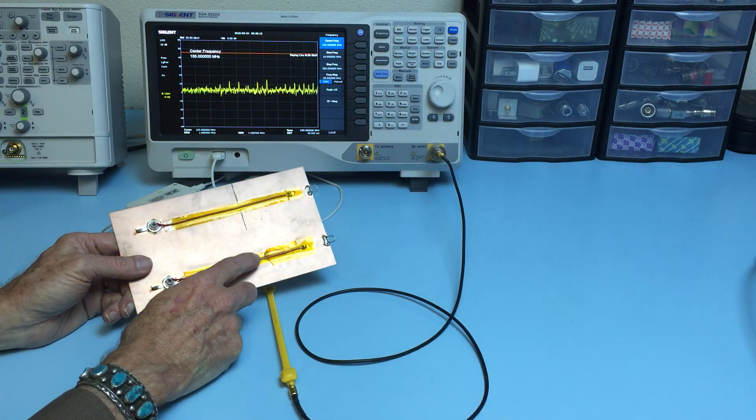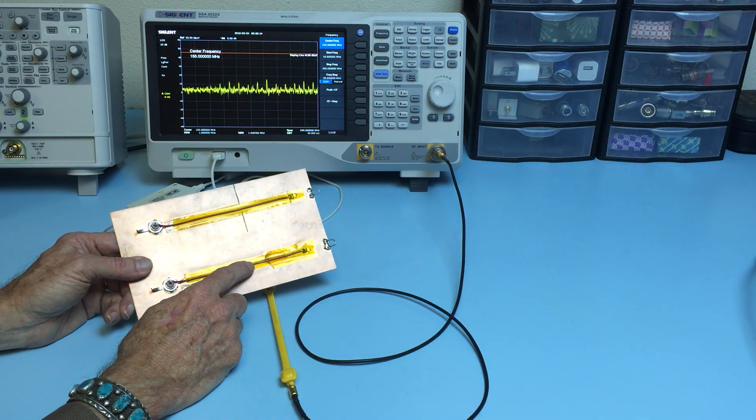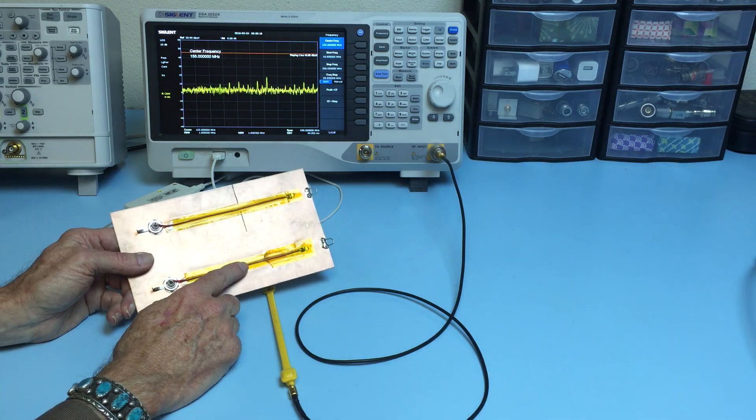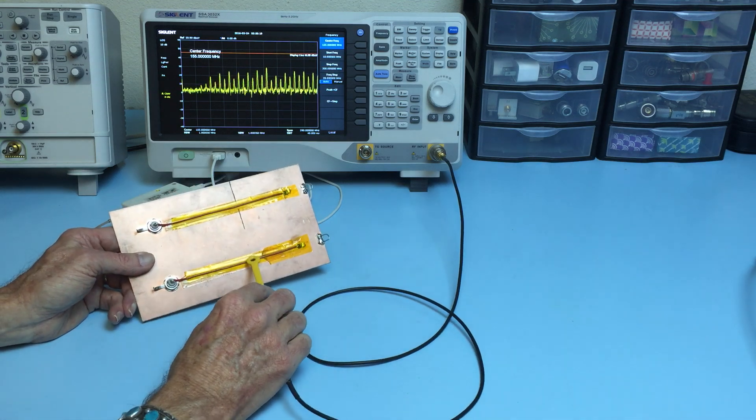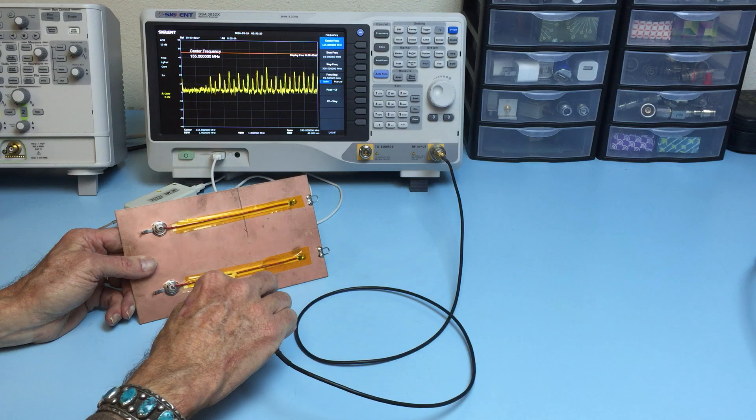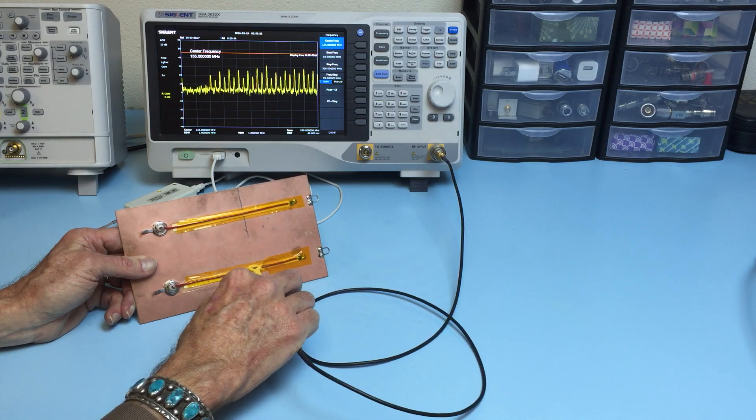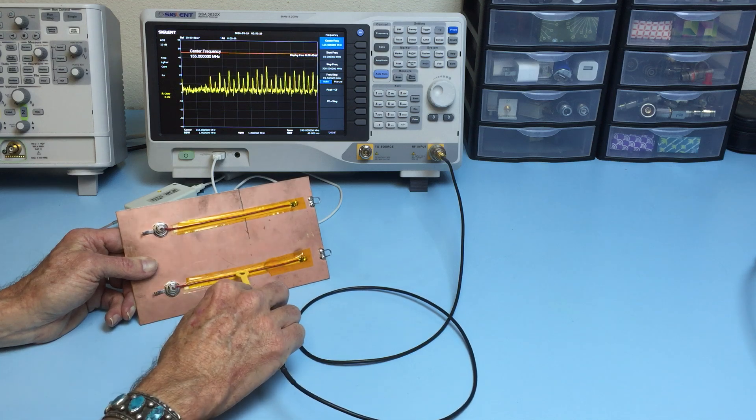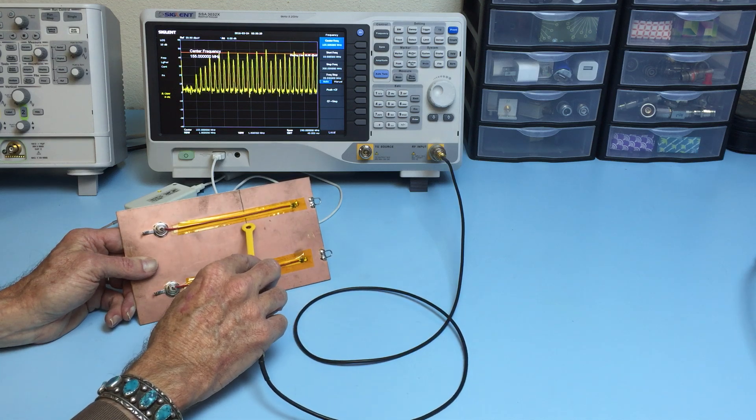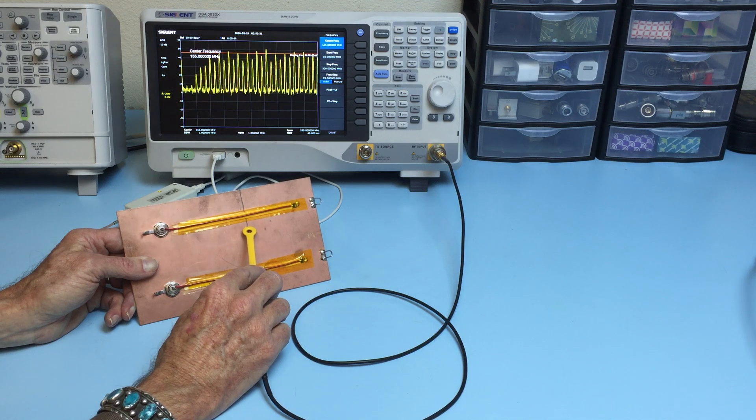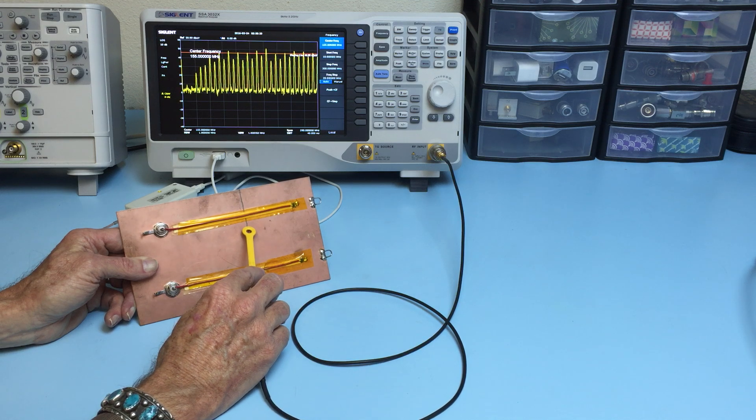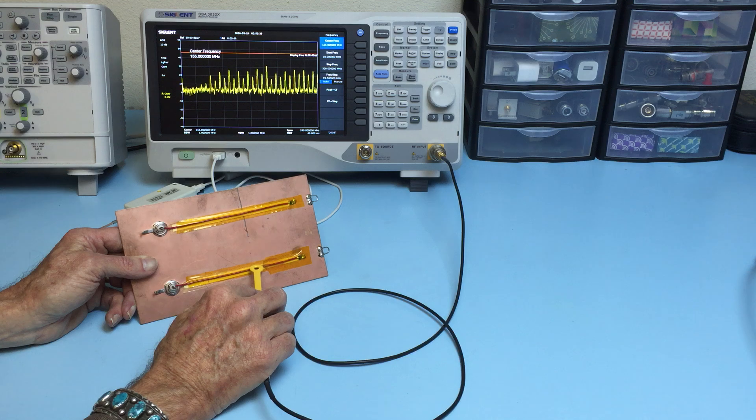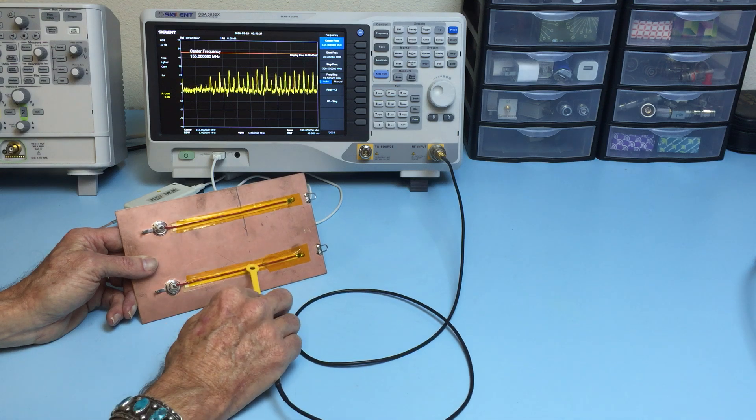Thereby coupling in energy to this victim trace. Now this is basically what we're seeing here is crosstalk from this clock trace. So placing a gap is not only bad for radiated emissions, as we'll see in a minute, but it also causes crosstalk.